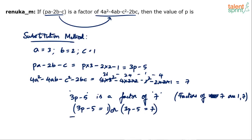Simplify: if 3p minus 5 equals 1, then 3p=6, so p=2. Or if 3p minus 5 equals 7, then 3p=12, so p=12/3=4. Therefore p is 2 or 4.